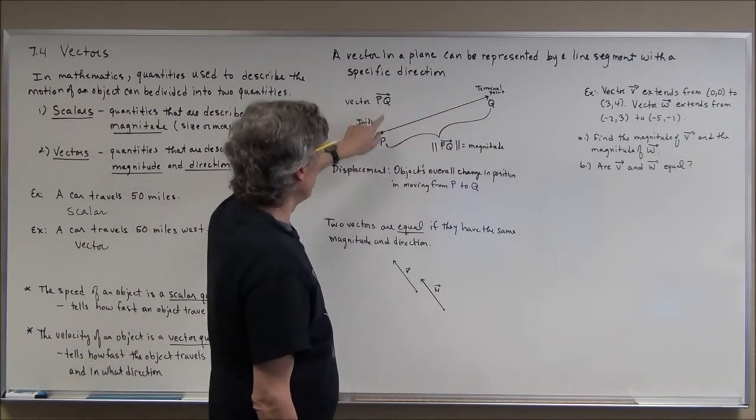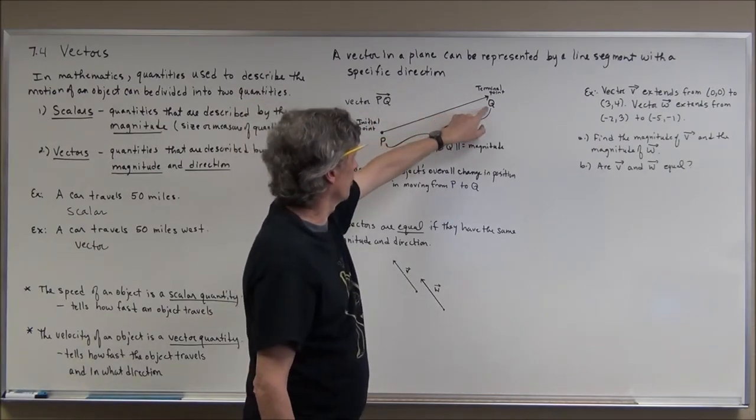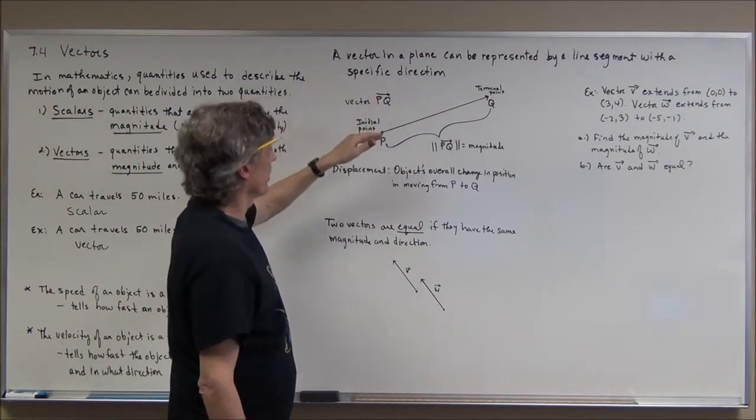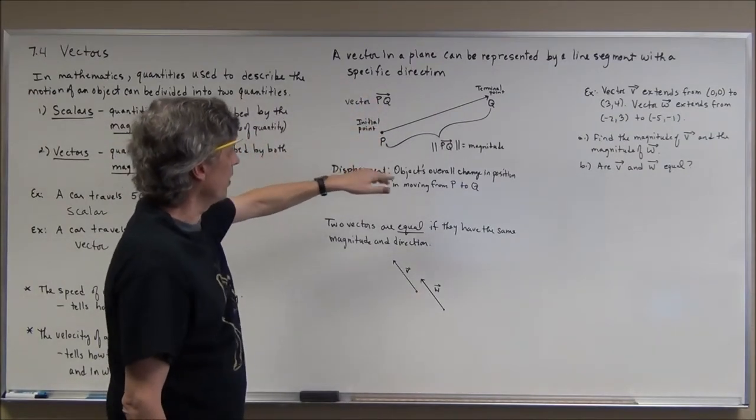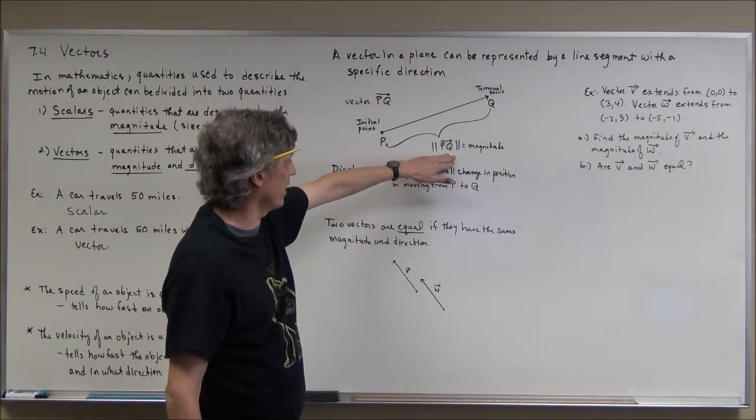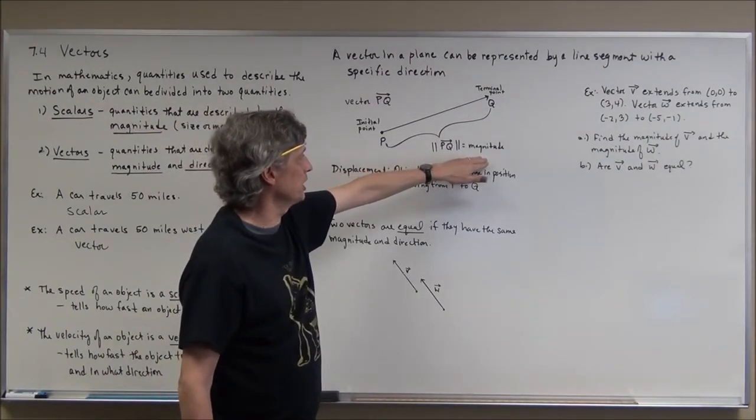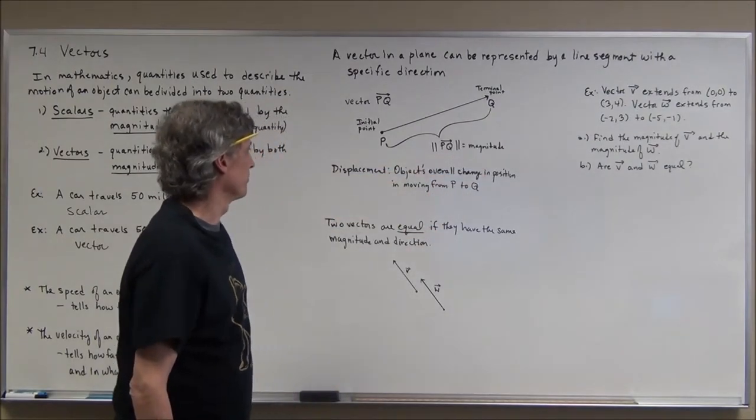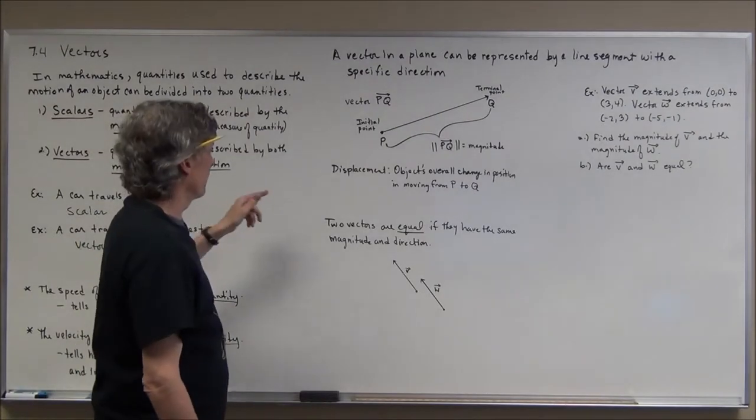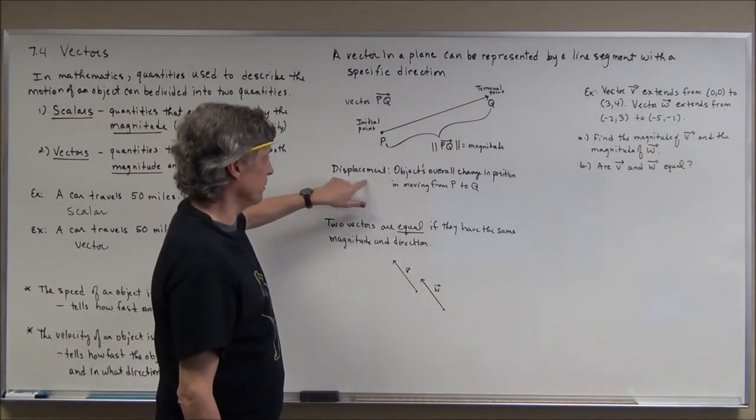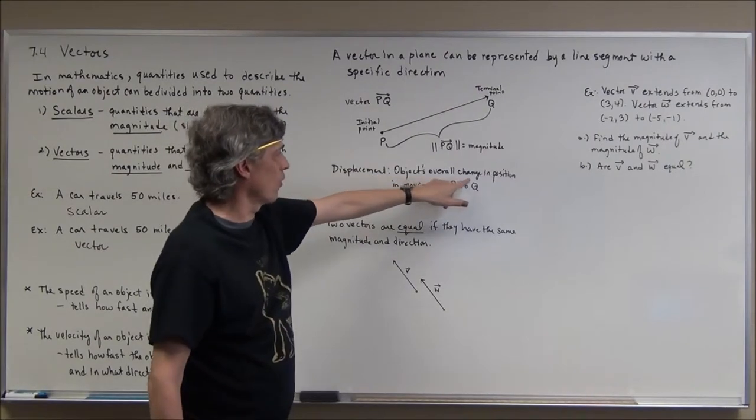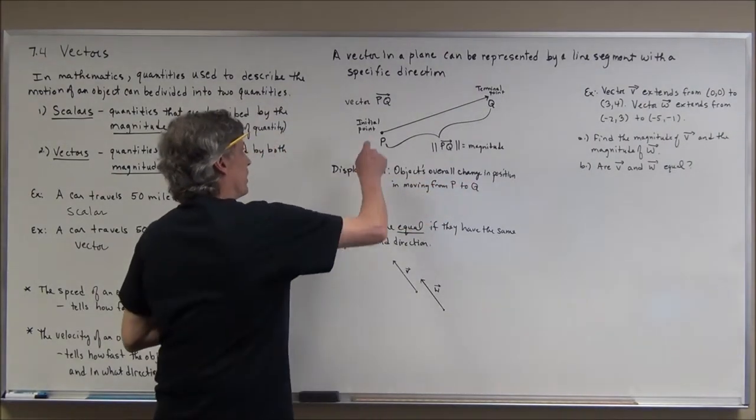We have vector PQ - we always start with the initial point and go to the terminal point so we know the direction, kind of like when you did geometry with rays. We also use what looks like double absolute value bars around the vector to represent just its size or magnitude. Displacement is the object's overall change in position when it goes from point A to point Q.